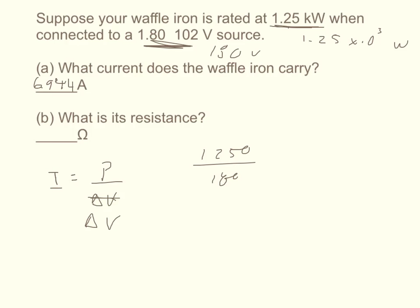Now what is the resistance? The resistance is pretty easy to find, so I'm going to show you a quick way and a little bit more complicated way. The resistance is equal to the potential difference over the current, which is 180 over 6.944, and that should equal roughly 25.92 ohms.